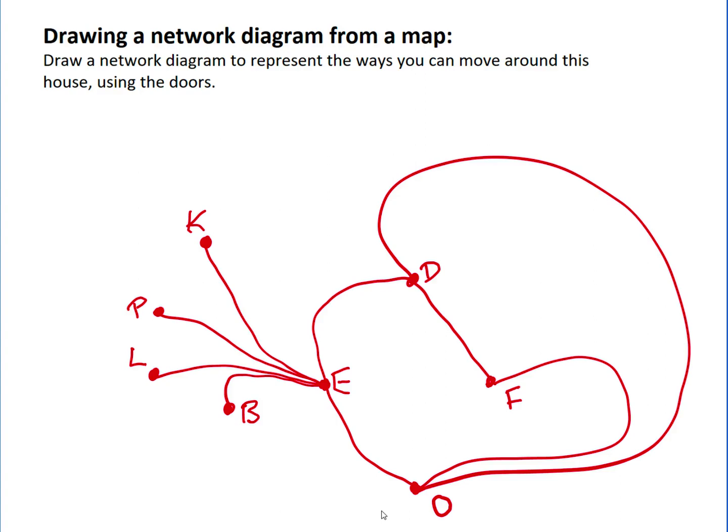So we can neaten it up, we can move the E so that that makes those lines shorter, remembering the idea that the whole network diagram is on rubber.